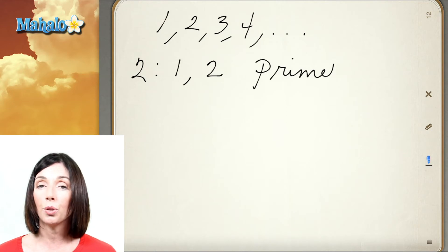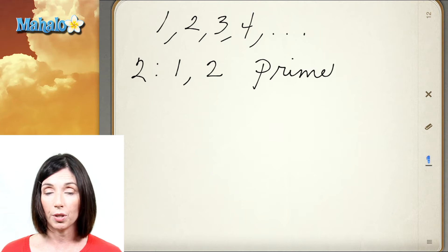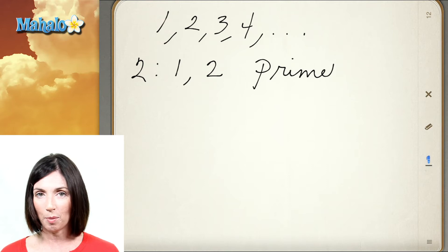Now since 2 is a factor of every other even number, that means that all other even numbers are not prime, they're composite. 2 is the only even prime number.